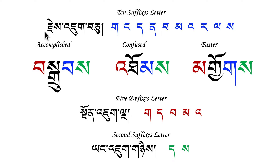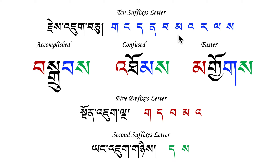In English, Jinjook Chu literally means a '10 suffix letter.' Jinjook is like a suffix, and Chu is the number 10. So how many Jinjook are there? Ten: ga, ga, ga, ta, na, ma, ma, a, ra, la, sa. These are the ten letters called Jinjook — the 10 suffix letters.